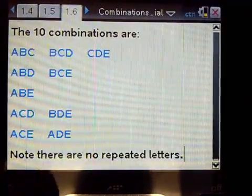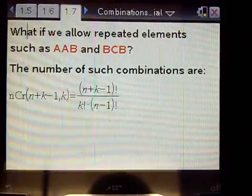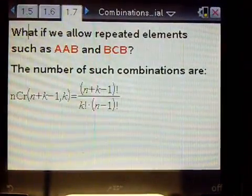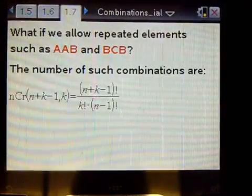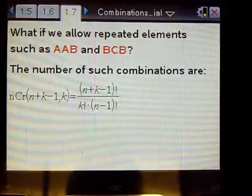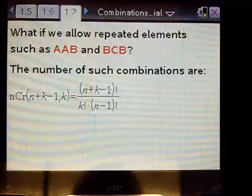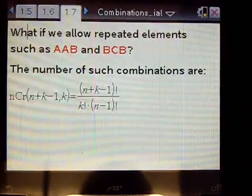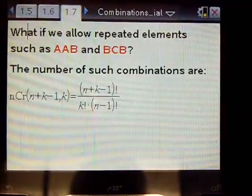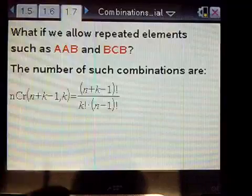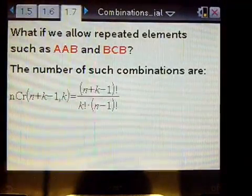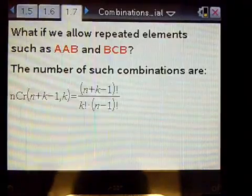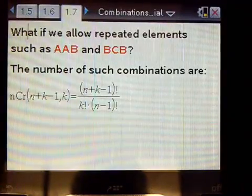But there are some cases that we can allow repeated selections, such as we can allow combinations as A, A, B, and B, C, B. What if we wanted to find the number of combinations where repetition is allowed? Then, the formula becomes n plus k minus 1 factorial over k factorial times n minus 1 factorial.